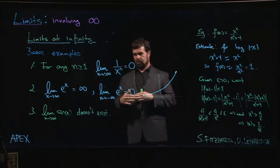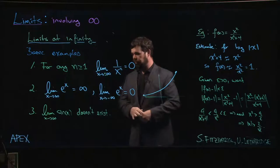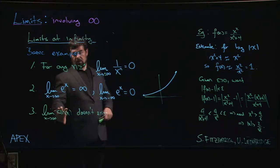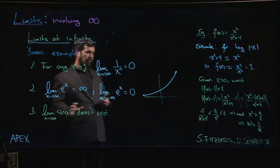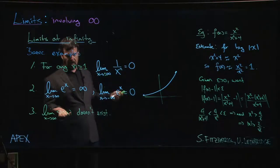As you continue on, you start developing some intuition for relative growth speed for different classes of functions. Typically your trig functions—sine and cosine—are bounded, so bounded functions in some sense don't grow at all. They're stuck within a certain range of values.